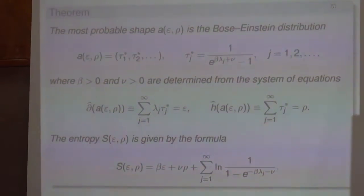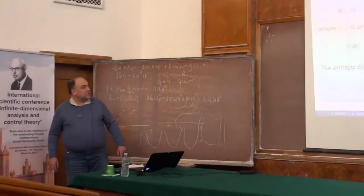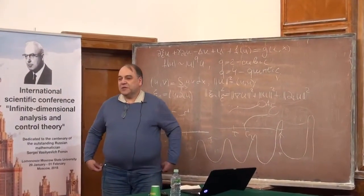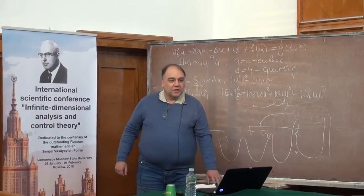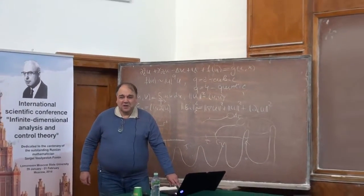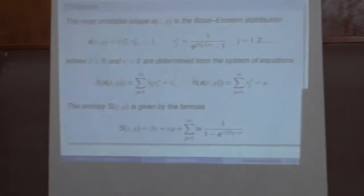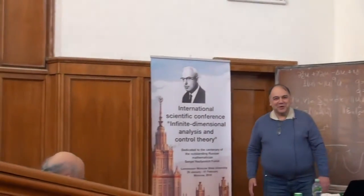My time is up, so I am finished. Let me also mention that this beta and nu serve as Lagrange multipliers, which permits us to refer to Lagrangian manifolds associated with this arithmetic semi-group. Thank you once more.